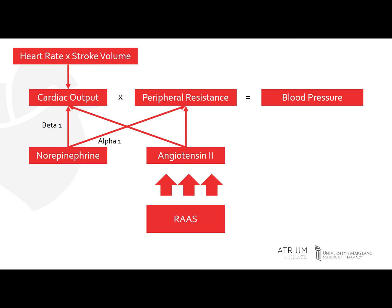This, like angiotensin 2, increases your cardiac output and your peripheral vascular resistance, which then leads to a blood pressure increase. So these are two main mechanisms for why hypertension occurs.